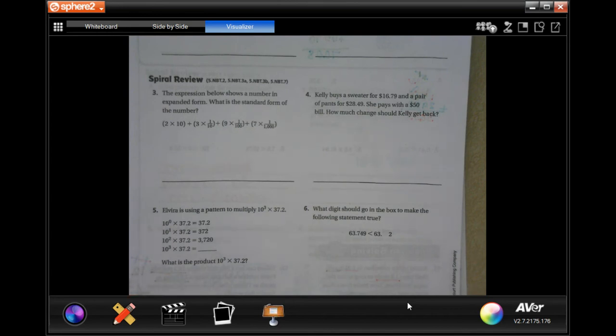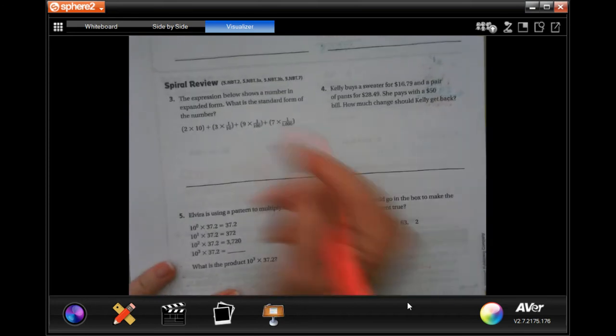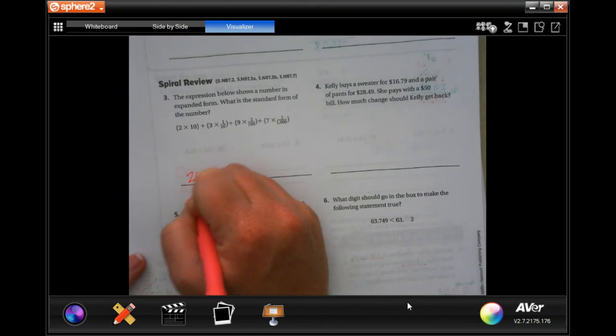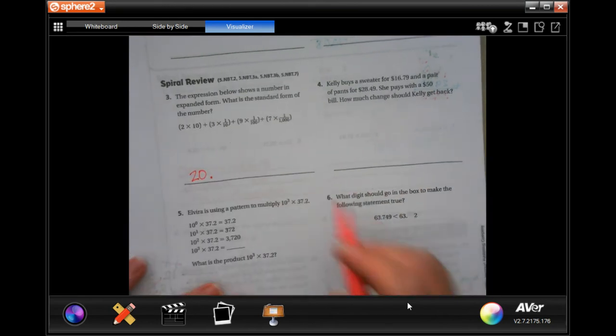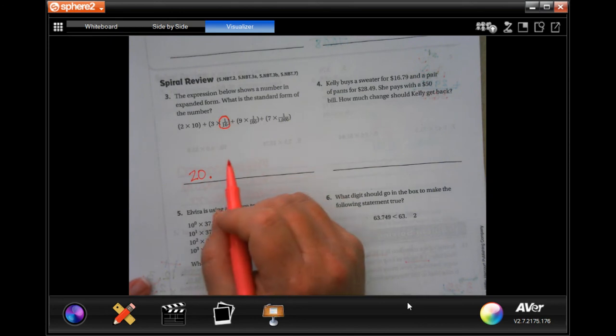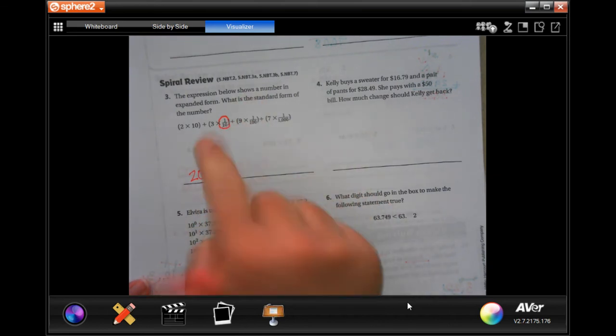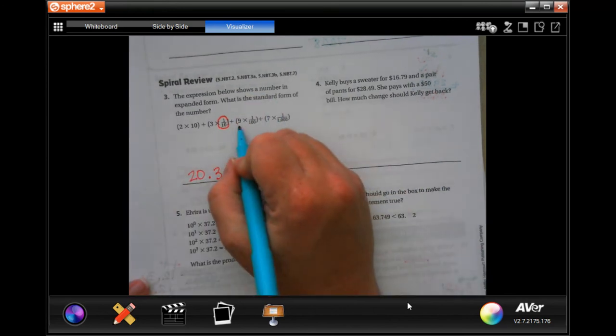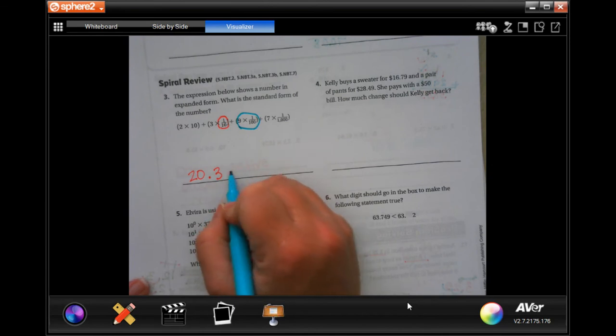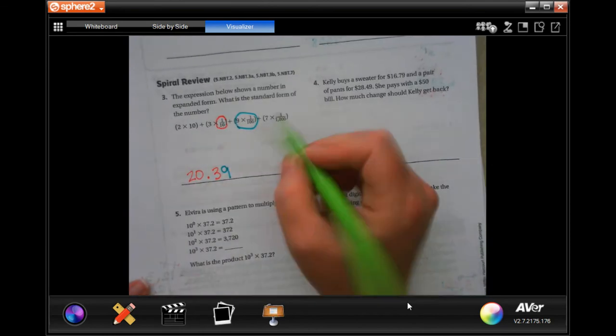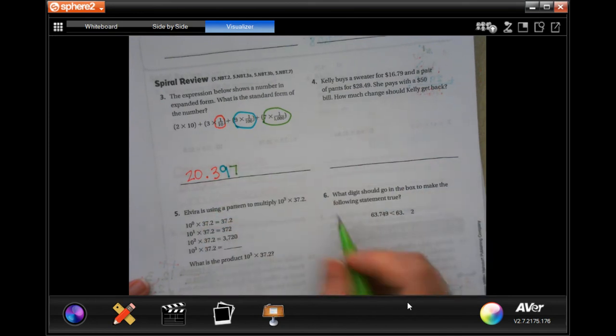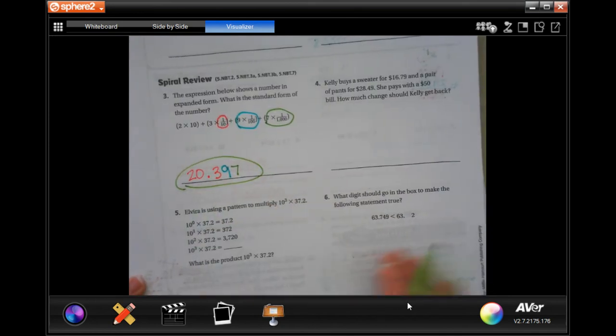The expression below shows the number in expanded form. What is the standard form of the number? We have 2 times 10, that's 20. Now see the one-tenth: that's the spot that goes in the tenth spot, which is the first spot after the decimal. So that's going to be a three there. Tells me nine is going to go in the hundredth spot, which is right after that, and seven is going to go in the thousandth spot, which is right after that.